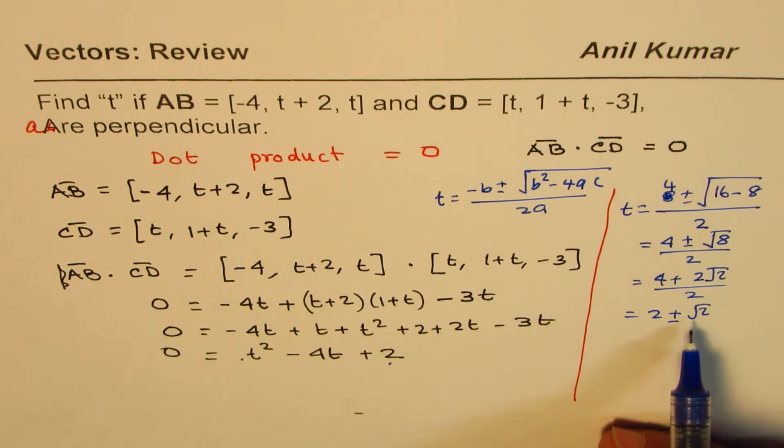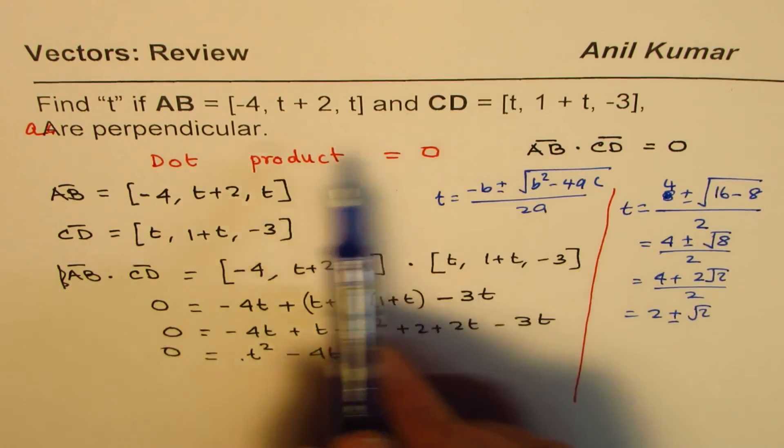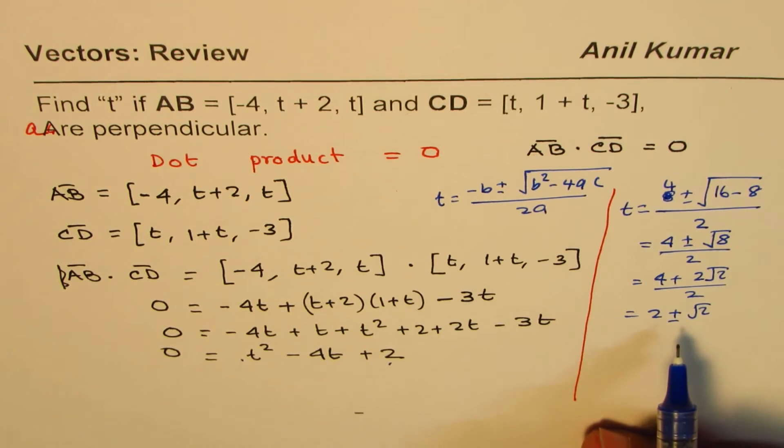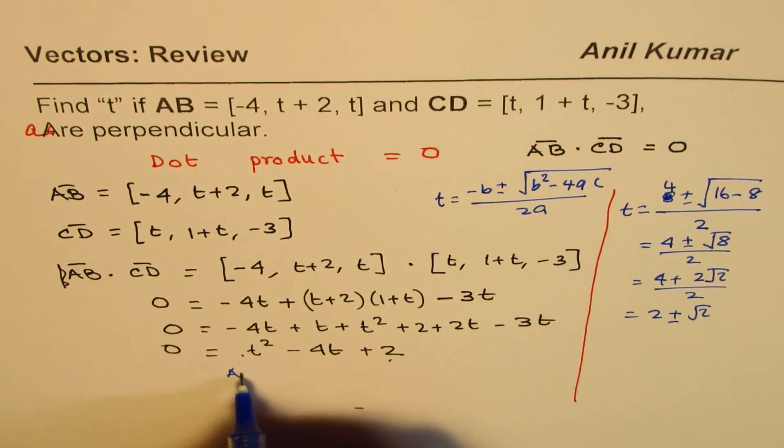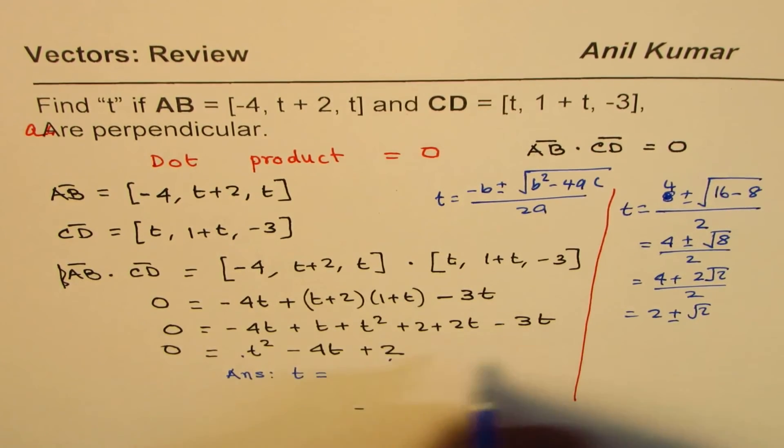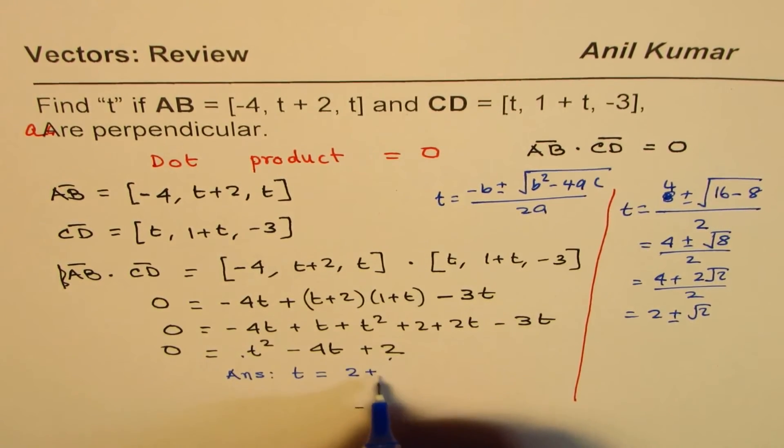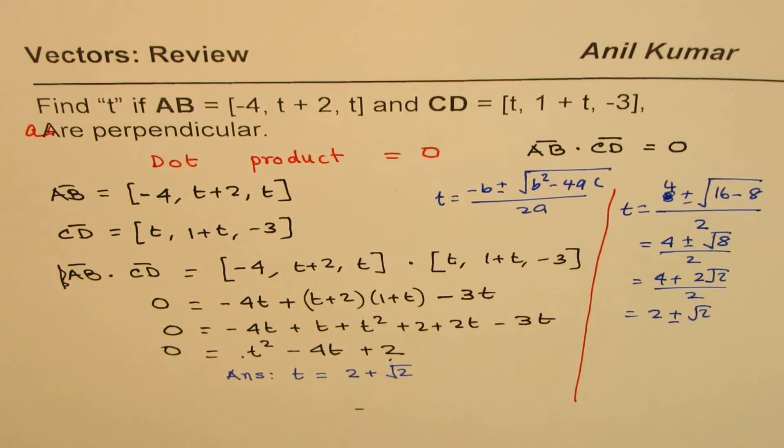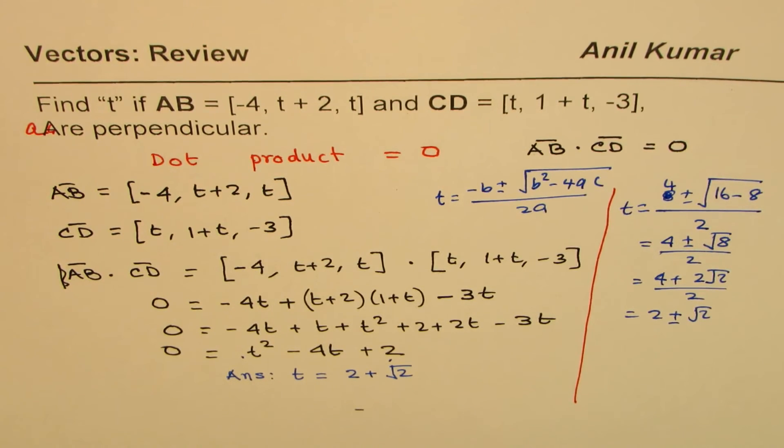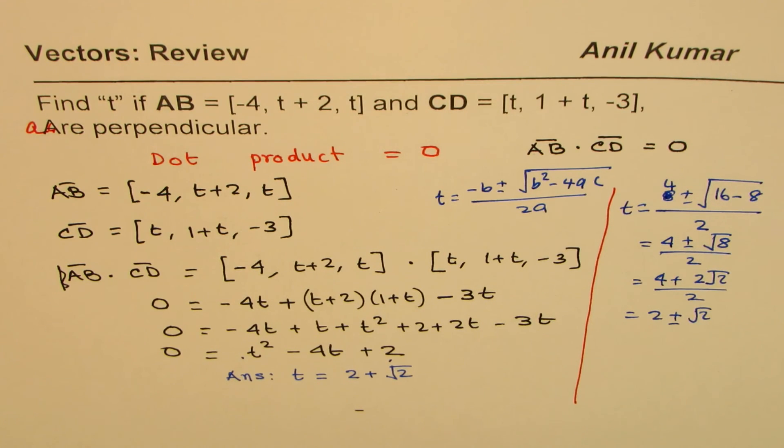So, that is the answer. Find t where these vectors are perpendicular. We could have 2 of these values. We can write down answer as t equals to 2, we can use any one of the values. Let's use plus. So, 2 plus square root of 2. That becomes the answer. One of the values will be t equals to 2 plus square root of 2.